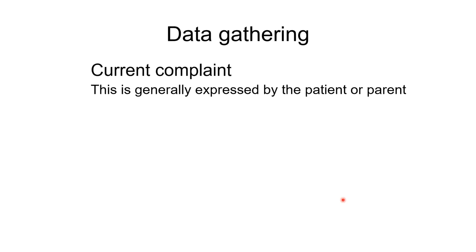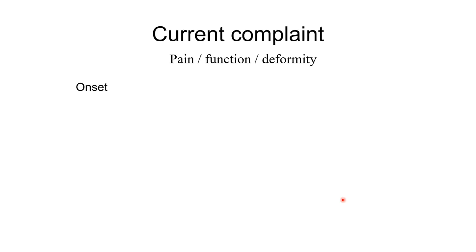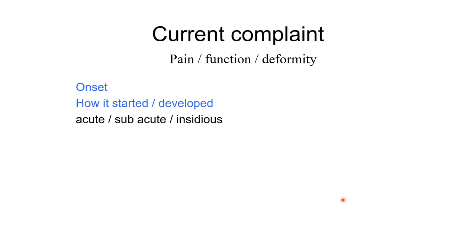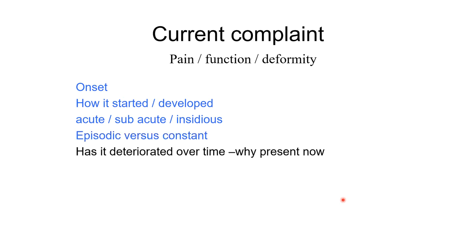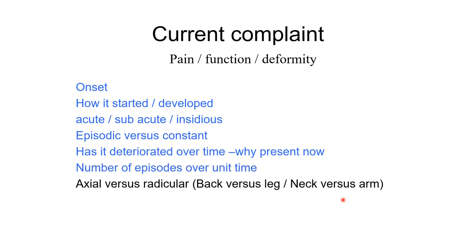The best approach is to start with the current complaint, which is generally expressed by the patient, the parent in the case of a child, or the carer in the case of an older patient. Typically this will be either pain or loss of function. We need to interrogate this: when did the pain start? Was it related to a particular activity or injury? Did it develop over time? Was it immediately severe or did it slowly increase in magnitude? Is it there all the time — such as a pathological cause related to infection or tumor — or episodic, which might be due to pushing the lawn mower once a week? Has it deteriorated over time? How frequently does it occur? Is it back or is it leg pain?